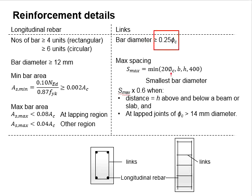The maximum spacing between the steel links is 20 times the size of the longitudinal bar.